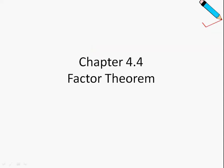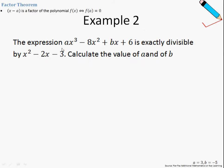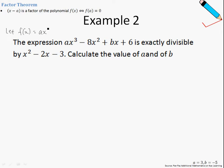Hi guys, welcome to Pencil College. In today's video, we'll be exploring more examples from chapter 4.4, the Factor Theorem. So in example 2, the expression given here is exactly divisible by x squared minus 2x minus 3. Calculate the value of a and b. So the first thing we're going to do, we're going to call the expression f of x. So let fx be ax cubed minus 8x squared plus bx plus 6.